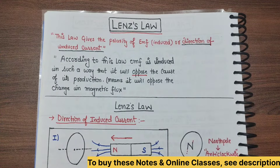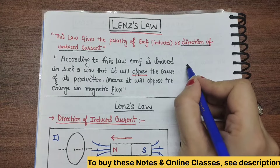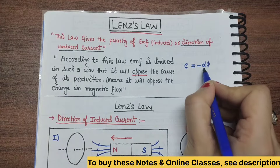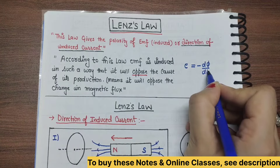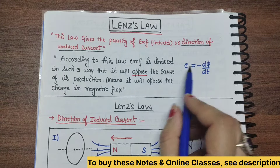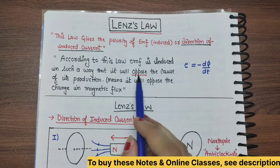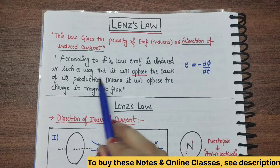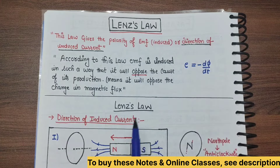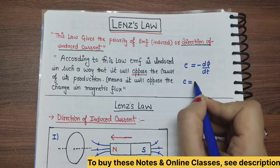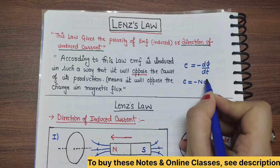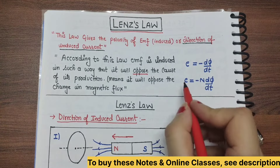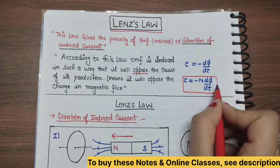So according to this, the EMF induced in your coil is equal to minus dΦ/dt — the rate of change of flux — and here a minus sign appears. This minus sign comes from Lenz's Law, indicating that the direction is opposite. For N number of turns, EMF equals minus N dΦ/dt. This minus sign in the electromagnetic induction formula comes from Lenz's Law.